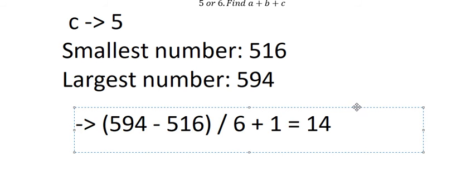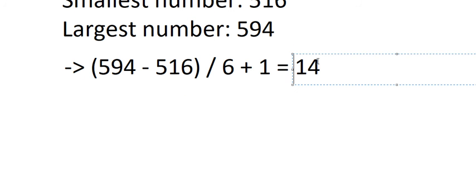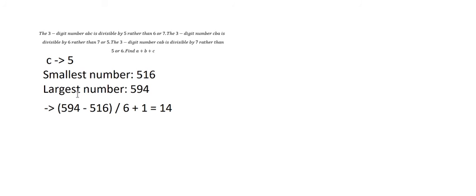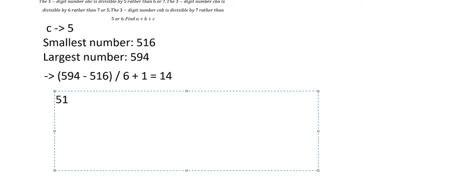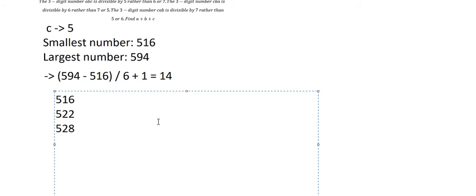You take 594 minus 516, divide by 6, then add 1 — you get a total of 14 numbers. All 14 numbers run from 516 to 594. For example: 516, 522, 528 — you just add 6 each time to get the next number. We count all of them because we want to analyze every number in this range.